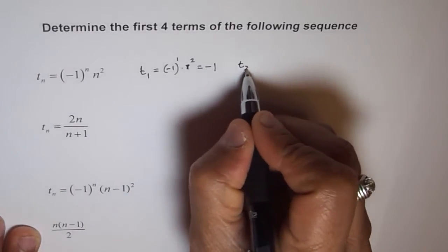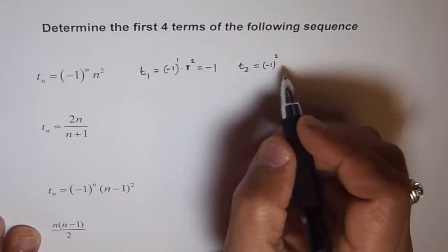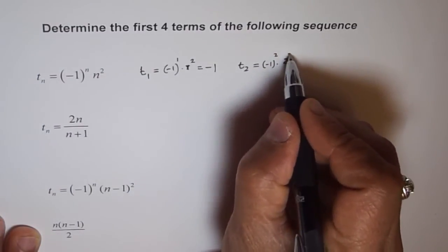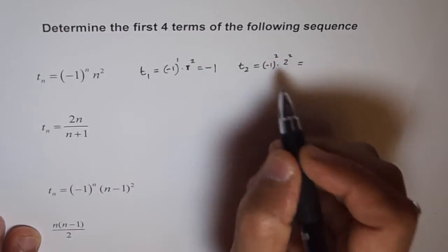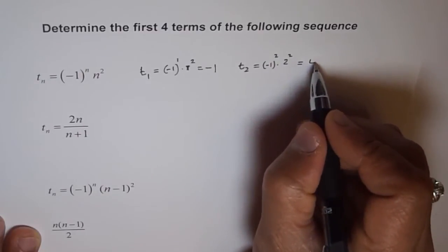How about t2? To find t2, we'll plug in 2 here. So, we get minus 1 to the power of 2 times 2 square. And this will be minus 1 square will be positive and 2 square will be 4, so we get positive 4.